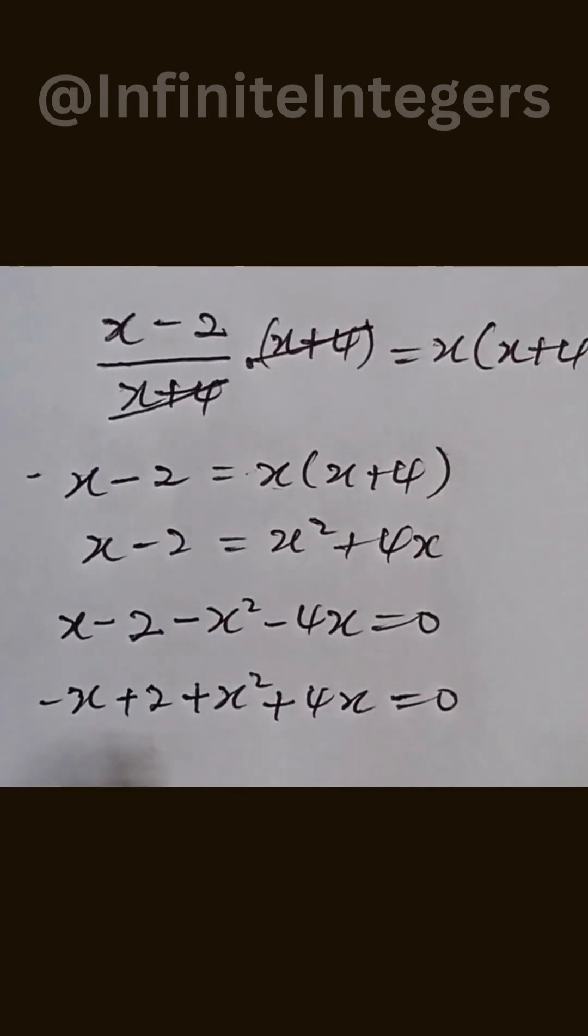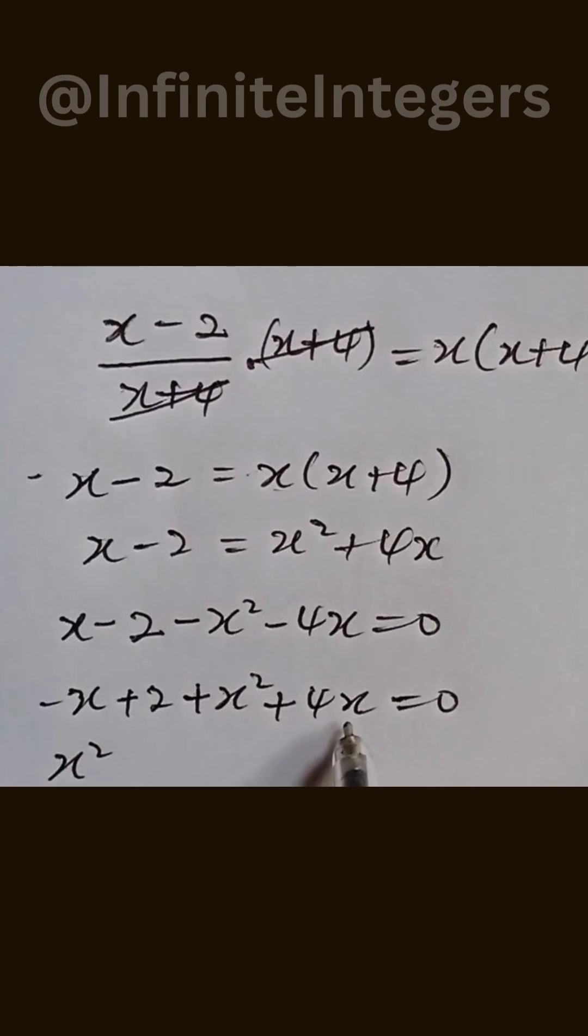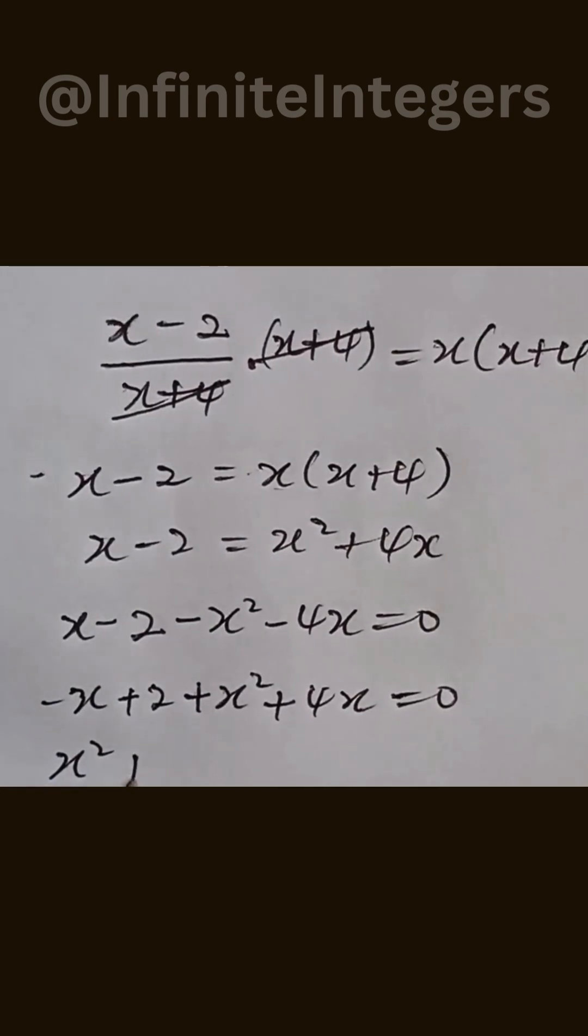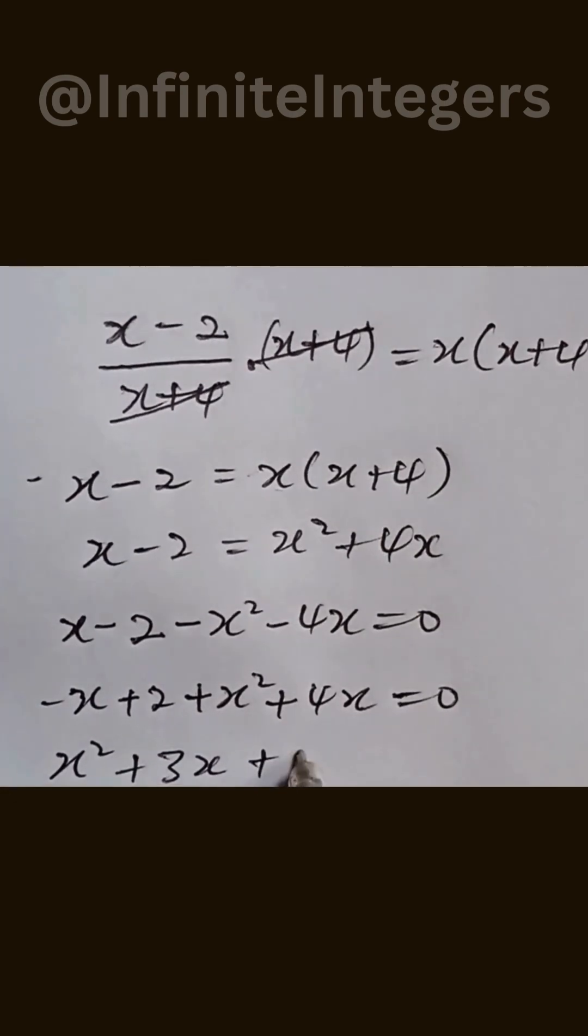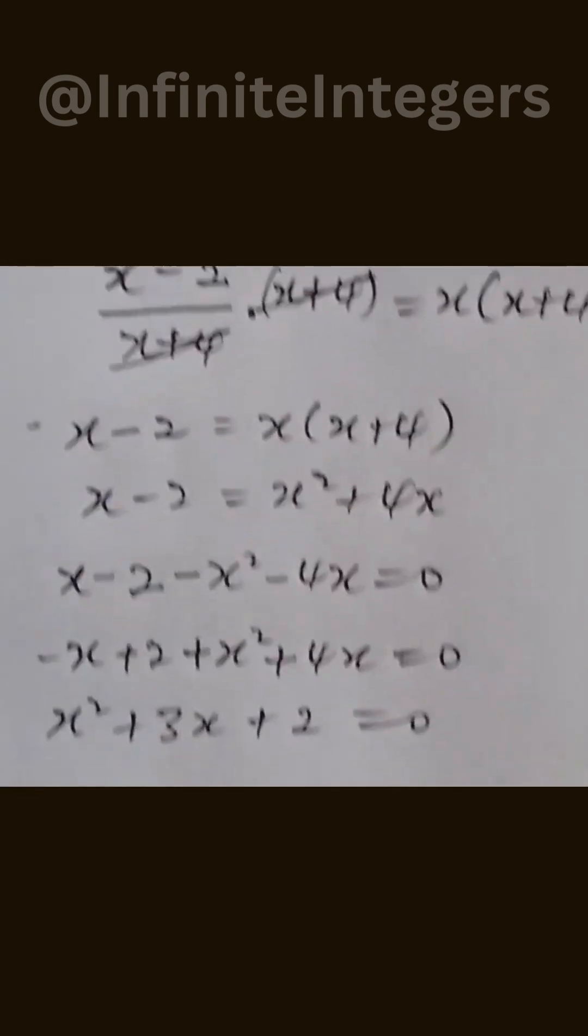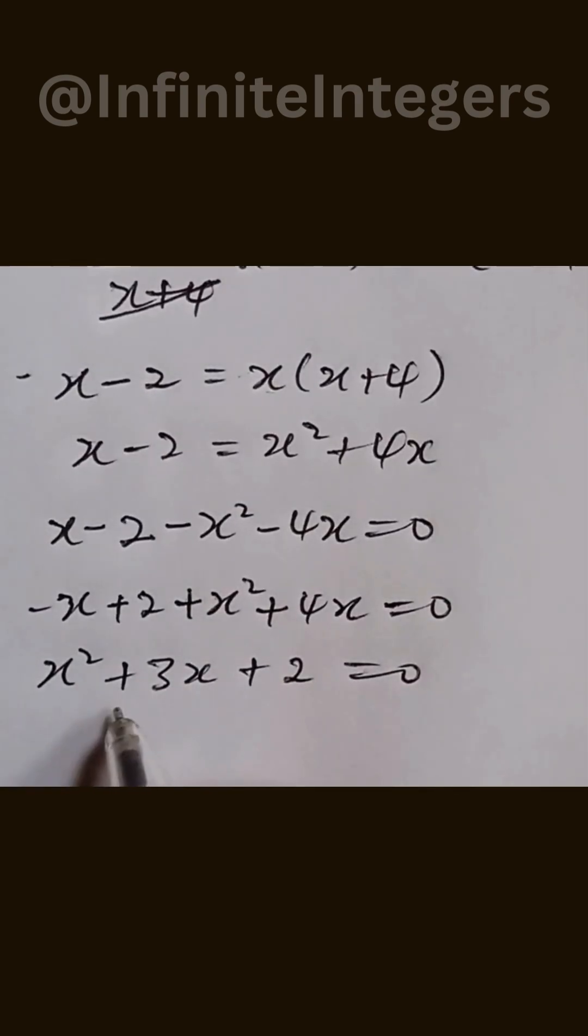We can rearrange this as x squared, then x minus x minus 4x gives us plus 3x, then plus 2, everything equal to 0. So this is a quadratic equation.